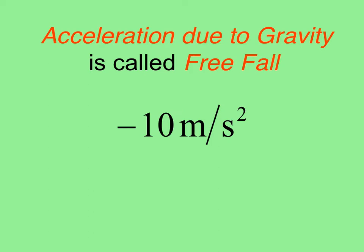Remember that the definition of freefall is the acceleration due to gravity. The value for gravity on Earth is negative 10 meters per second squared. The unit of meters per second squared corresponds with the fact that this is an acceleration.